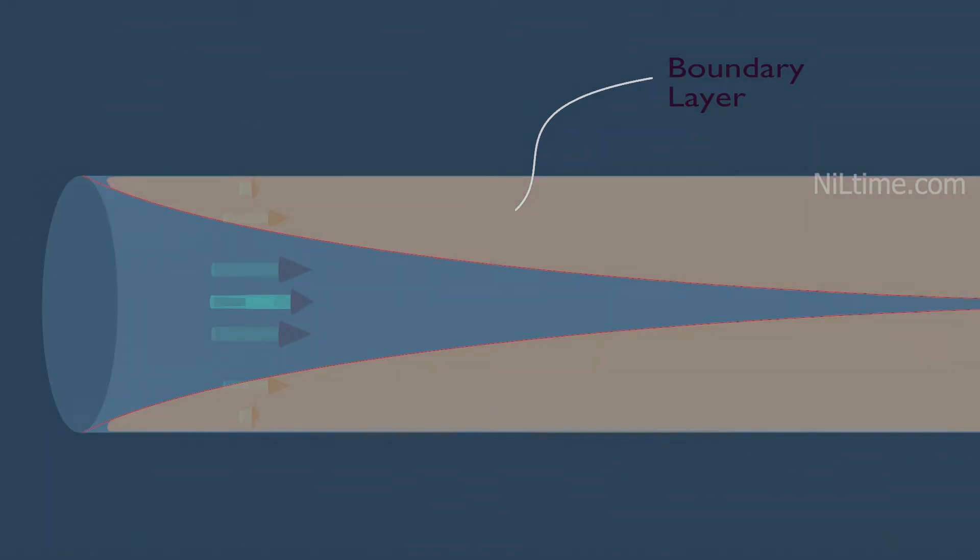But in the blue region, there is no boundary layer surrounded, so the frictional effects are negligible, and the velocity remains essentially constant in the radial direction. This blue region is called the irrotational flow region.